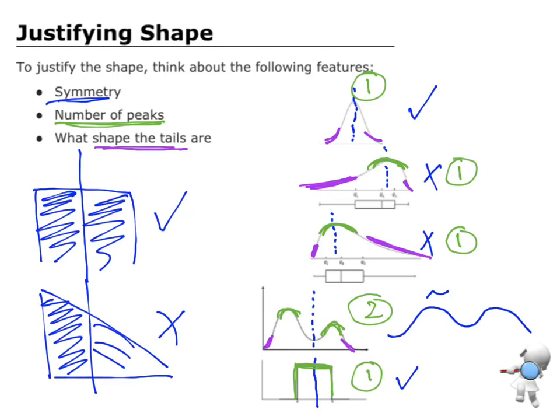For a uniform distribution, there is no tail because the data just goes straight up and down. And that's what I need to be able to do to justify the shape at merit.